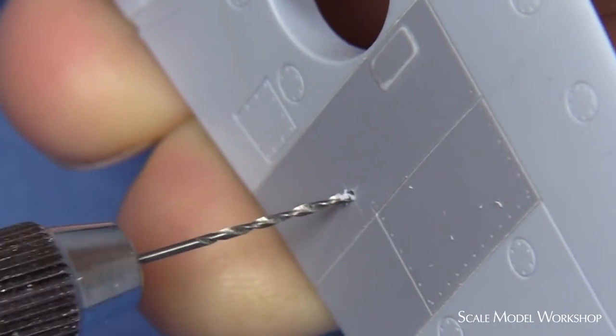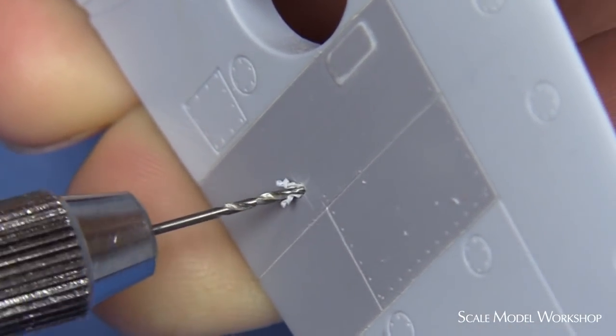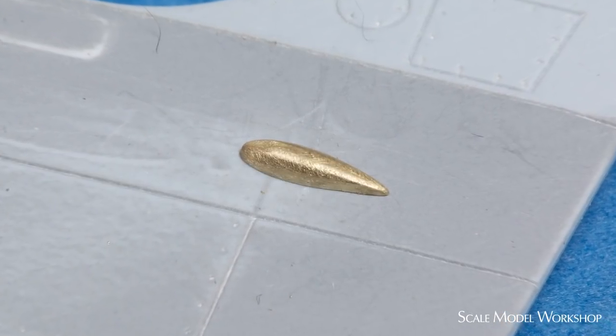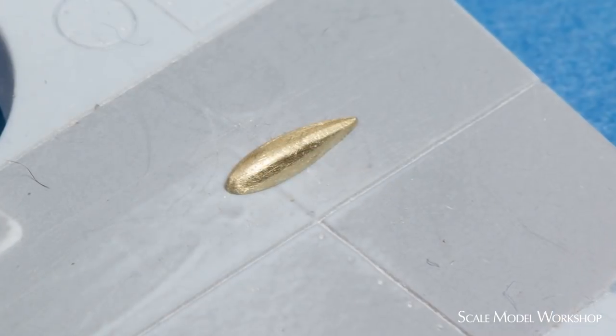The location of the blister is marked and a hole is drilled that will allow the blister to be press-fit to place. Here you can see the final blister ready for priming.